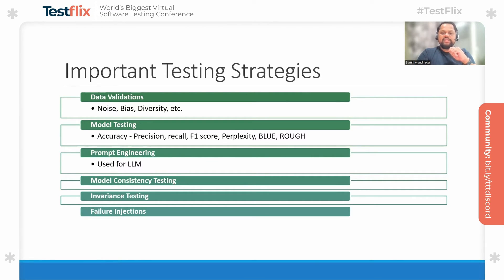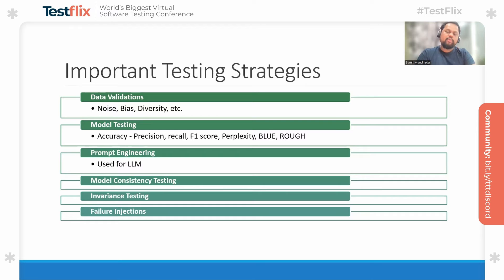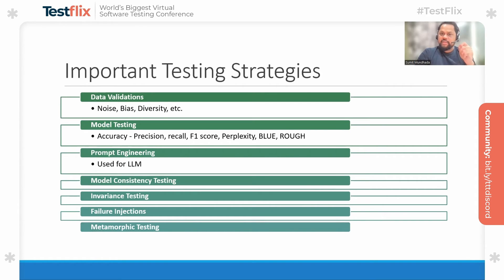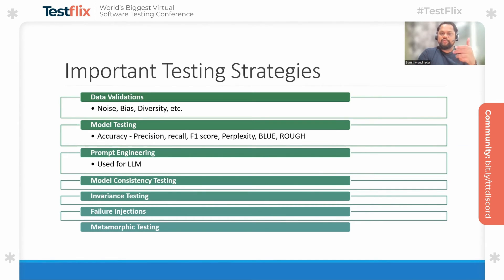Another interesting testing strategy is failure injection. One has to introduce failures into the model and try to evaluate how the model is giving the desired output or not. Failure injection becomes a very important testing strategy to understand how the model behaves when failures are introduced. After that, metamorphic testing becomes a very important testing strategy — particularly to solve the problem of the test oracle, where as a tester we are not certain about the output. To solve this kind of test oracle problem, we use metamorphic testing as one of the key strategies when dealing with generative AI applications.